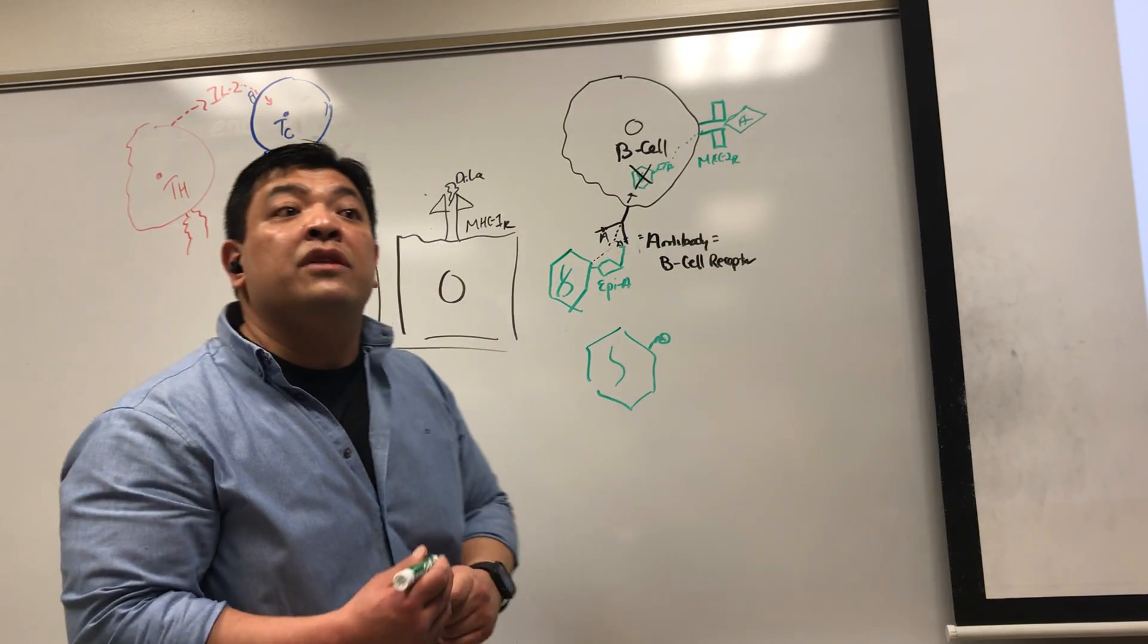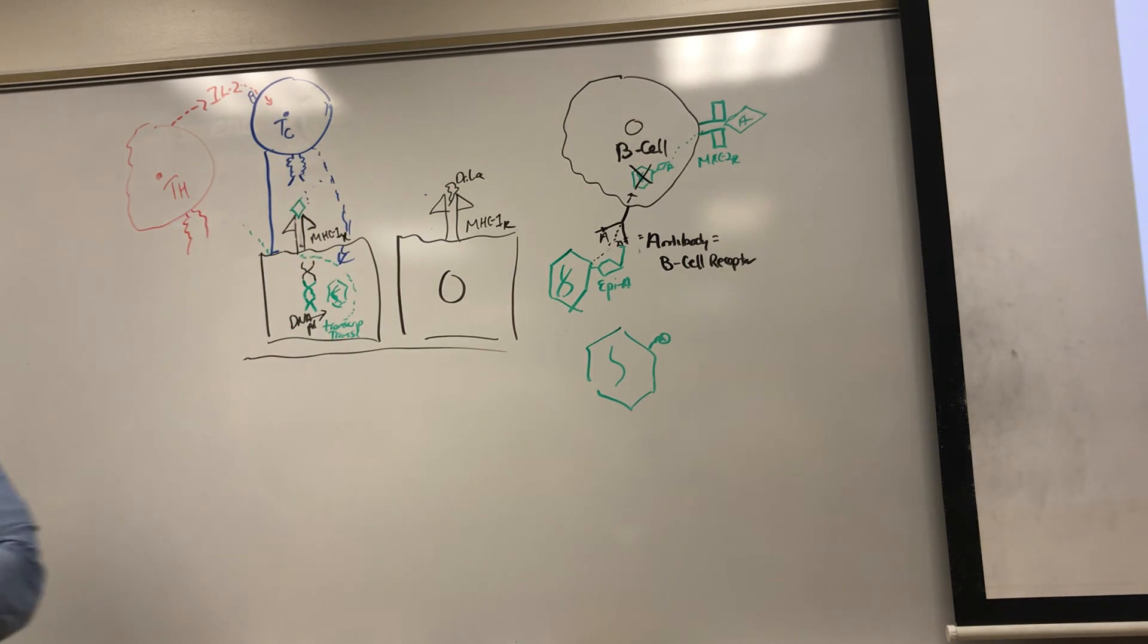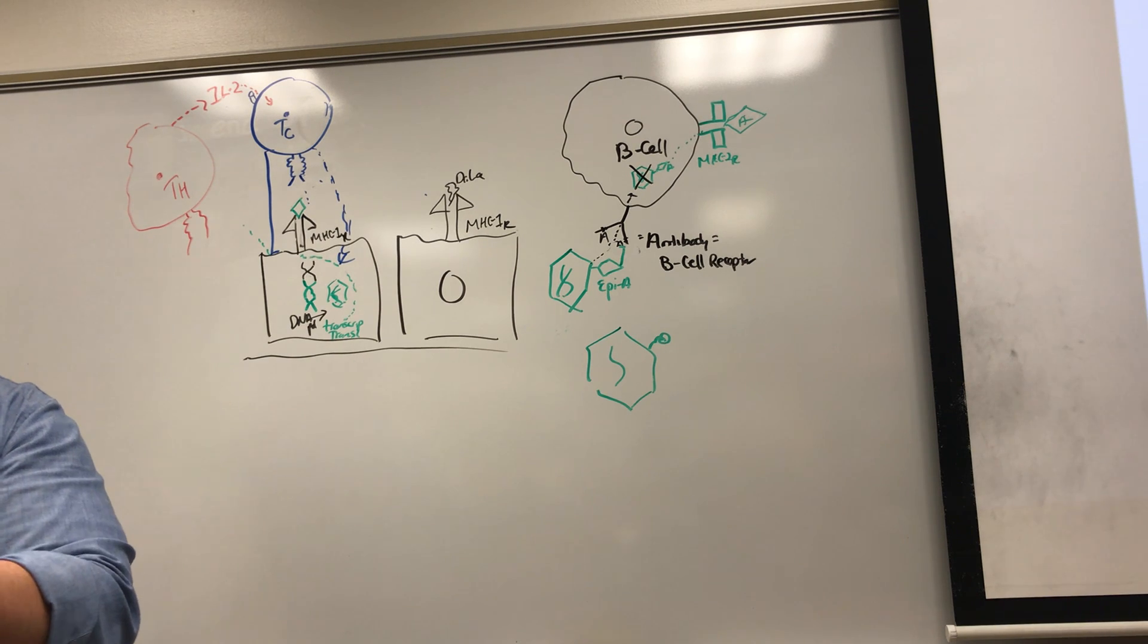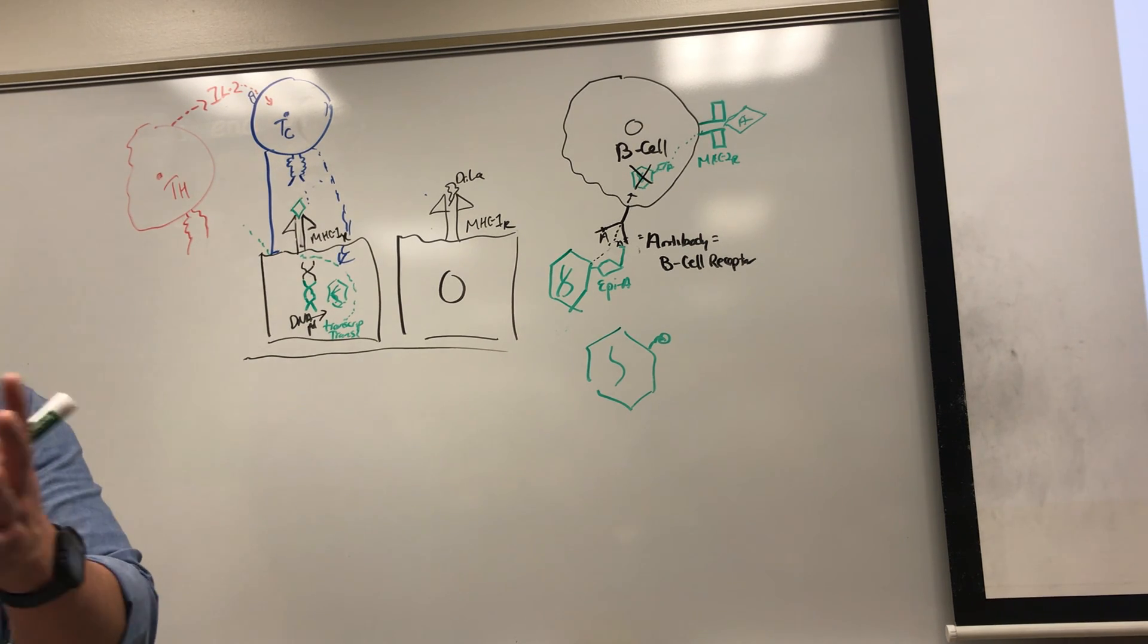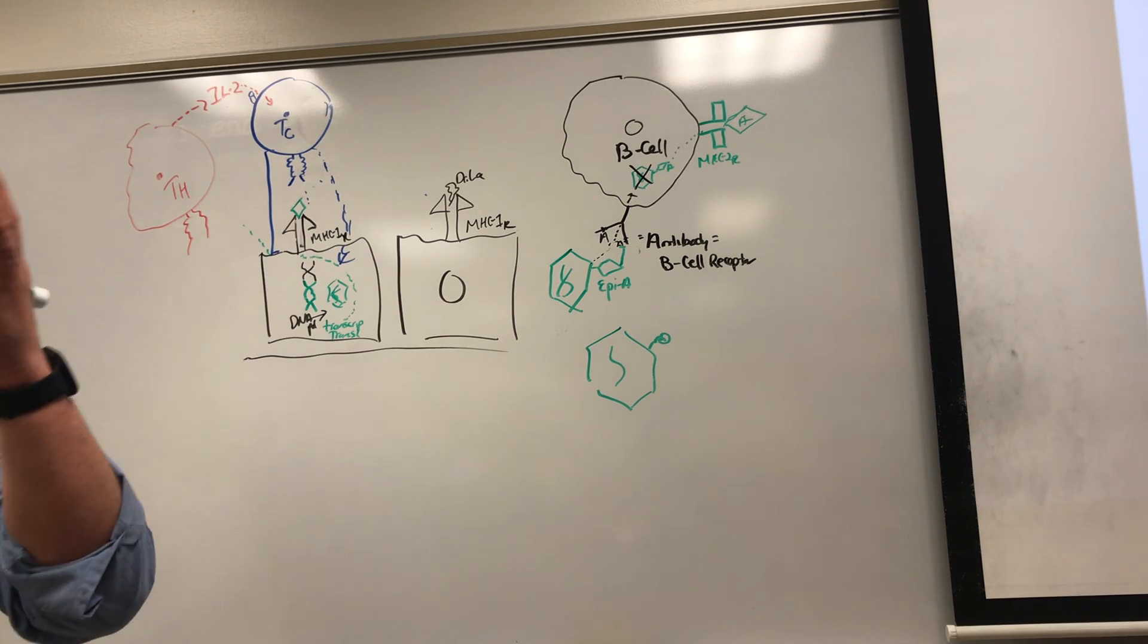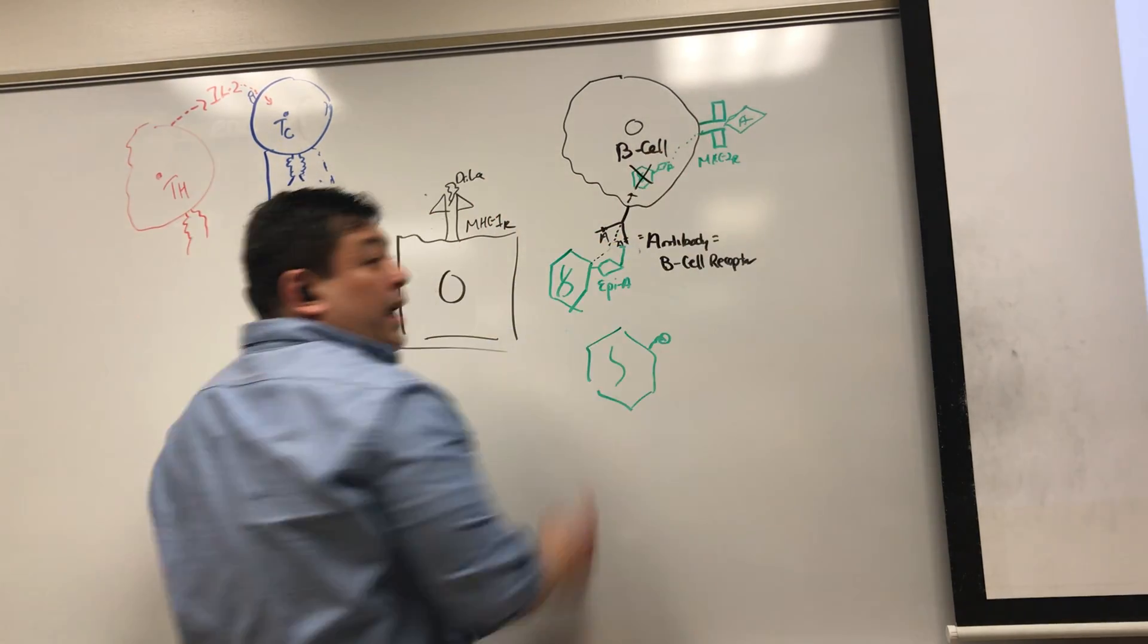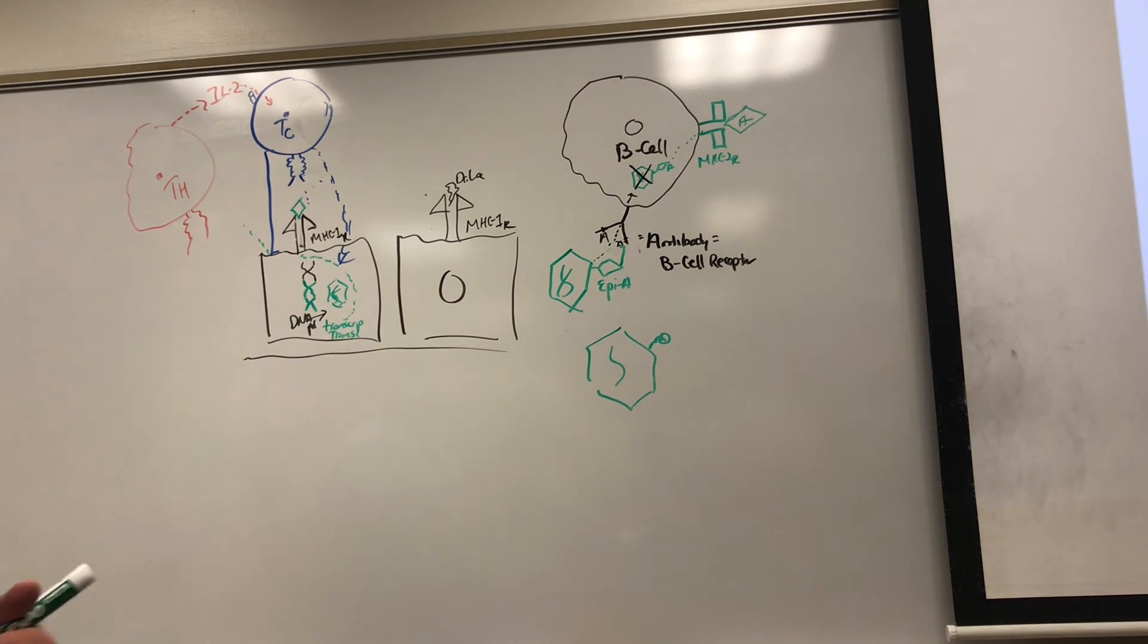It displays it on its MHC2 receptor. So the big difference between a macrophage and how it presents an antigen and a B-cell and how it presents is this. B-cells only present a specific epitope, the same epitope that allowed it to bring the virus or bacterium in. That's the only epitope that it's going to display on its MHC2. Macrophages will display all the different epitopes on all the different MHC2 molecules.